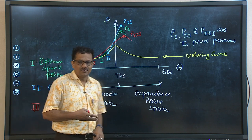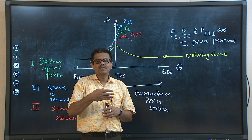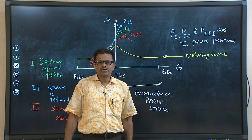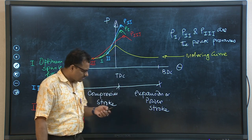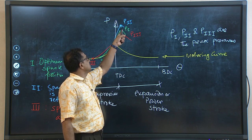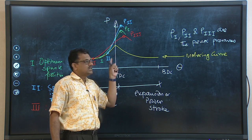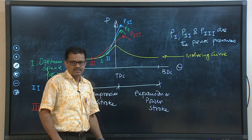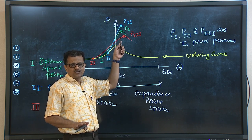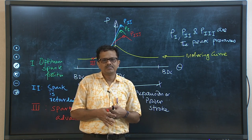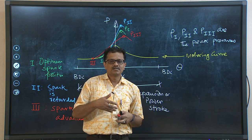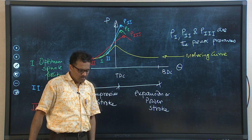The P-theta diagram is important to understand the magnitude of pressure rise and also the stiffness of the curve — whether the rise is sudden or gradual. These two aspects are critical for efficient and smooth engine operation. If the rise in pressure is very high and sudden, not only will it create jerky motion, but it may also lead to detonation.